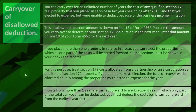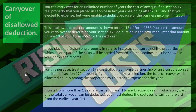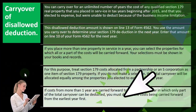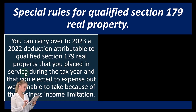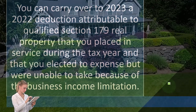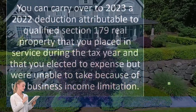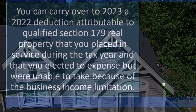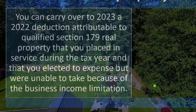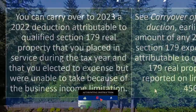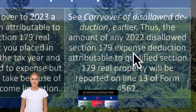If costs from more than one year are carried forward to a subsequent year in which only part of the total carryover can be deducted, you must deduct the costs being carried forward from the earliest year first. Special rules apply for qualified Section 179 real property. You can carry over to 2023 a 2022 deduction attributable to qualified Section 179 real property that you placed in service during the tax year and that you elected to expense but were unable to take because of the business income limitation.